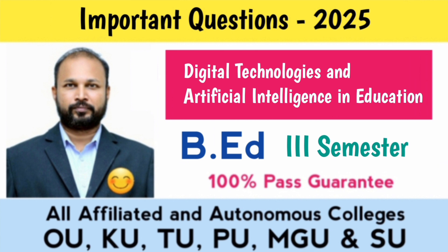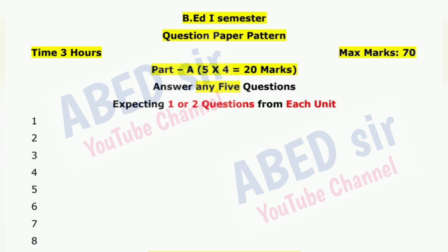This question paper has two parts. In Part A, short questions will be asked. Total 8 questions will be asked. Out of 8, you have to answer any 5, and each one carries 4 marks. So, 5 times 4 equals 20 marks you will get from Part A.